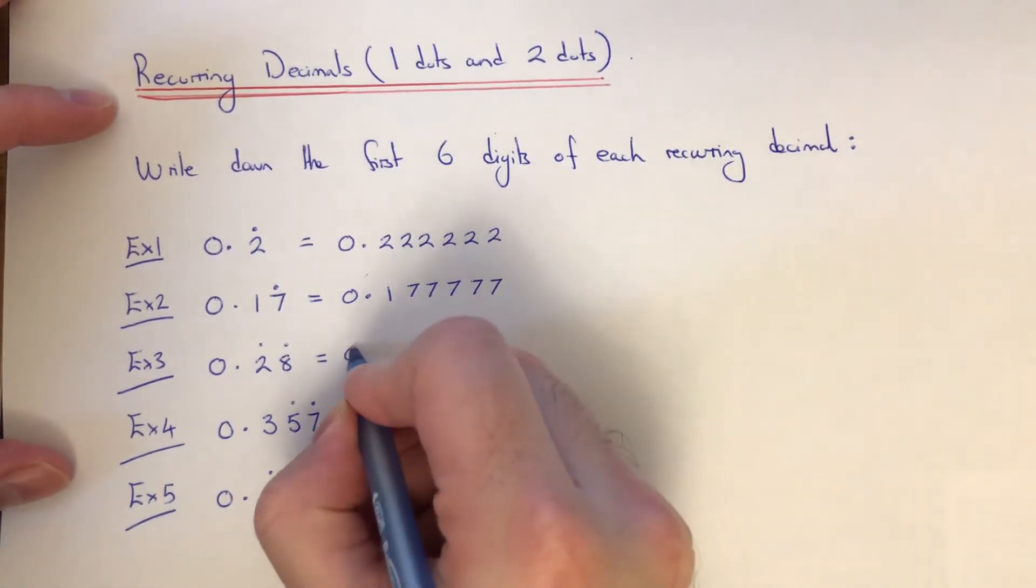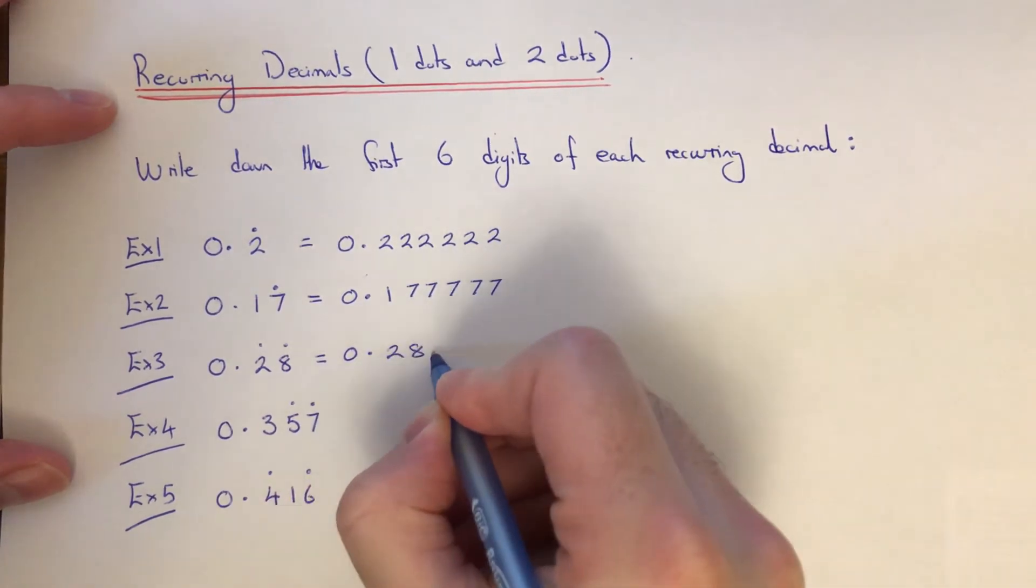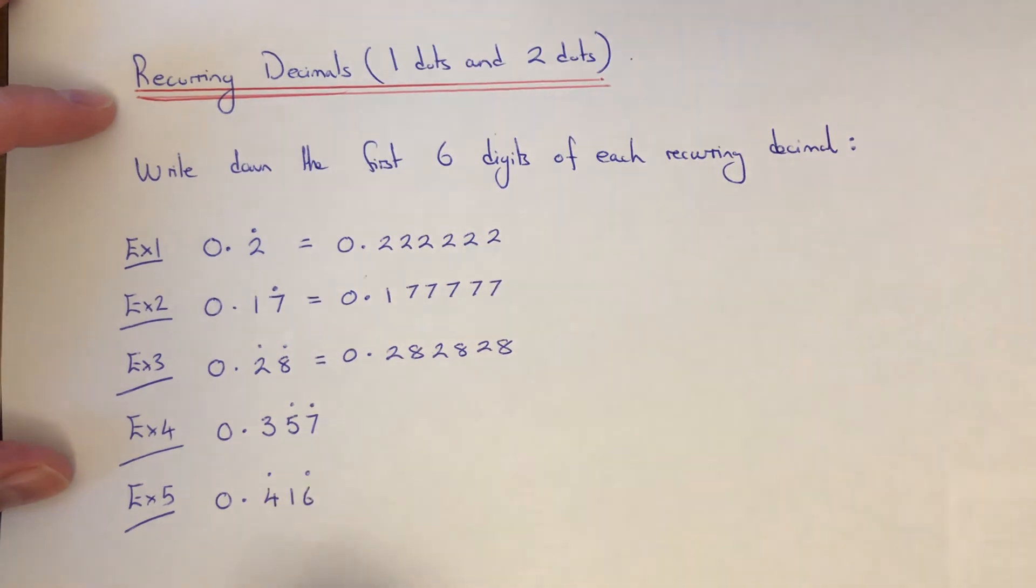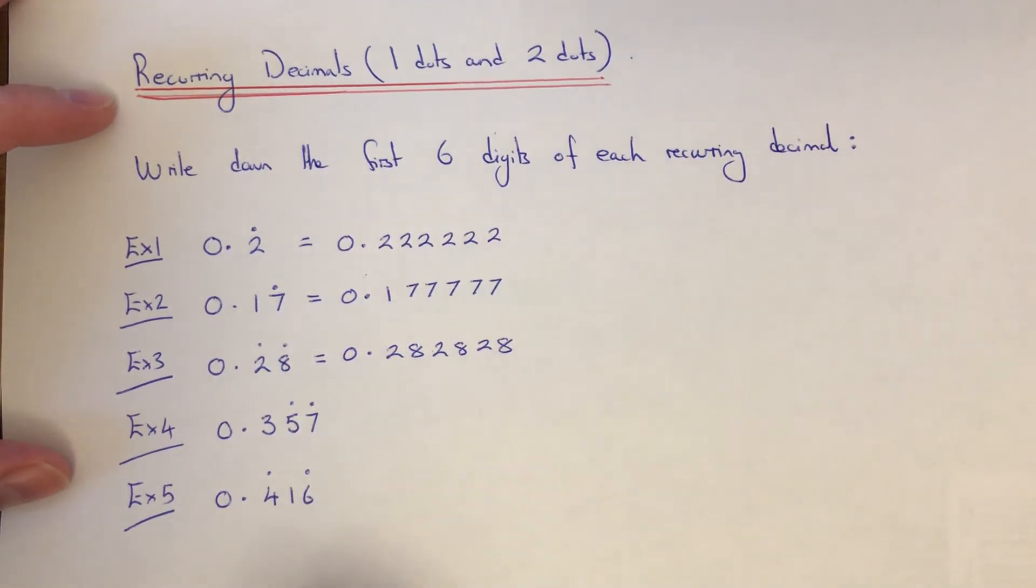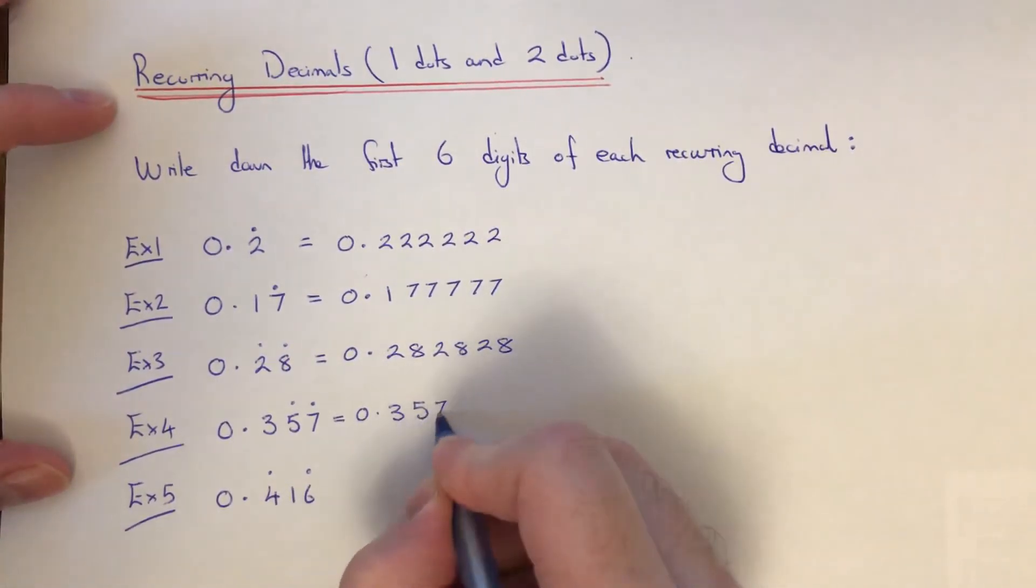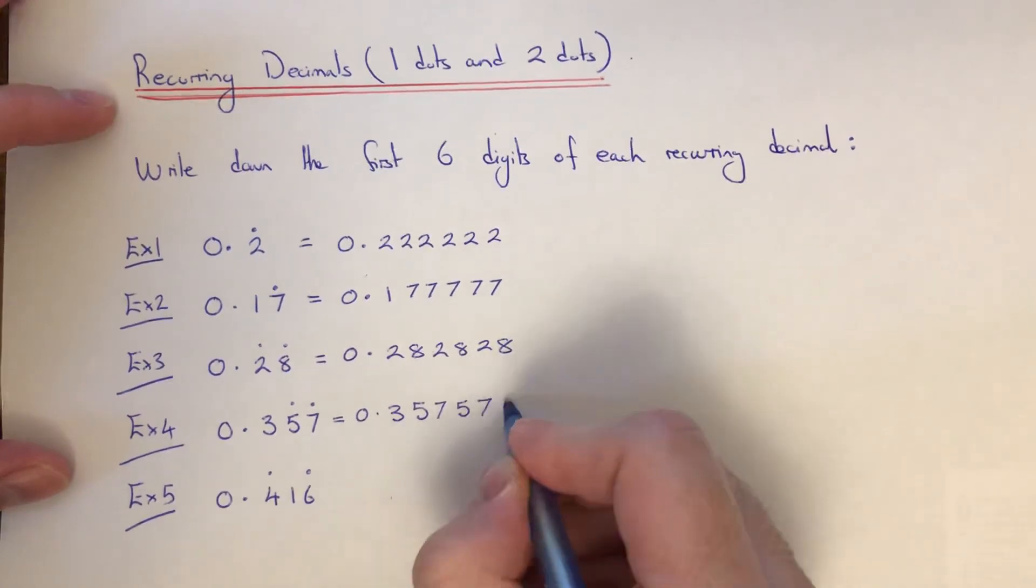Example four: we've got 0.3 with a dot on the five and a dot on the seven. This means the five and seven get repeated. The three doesn't get repeated because there's no dot on it.